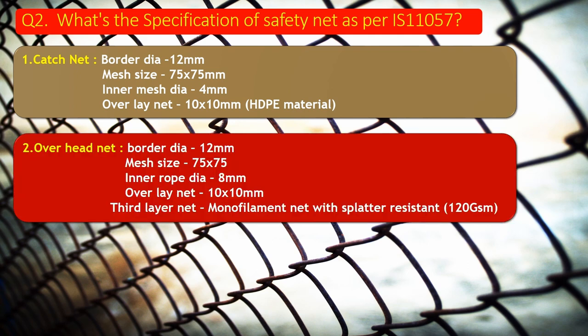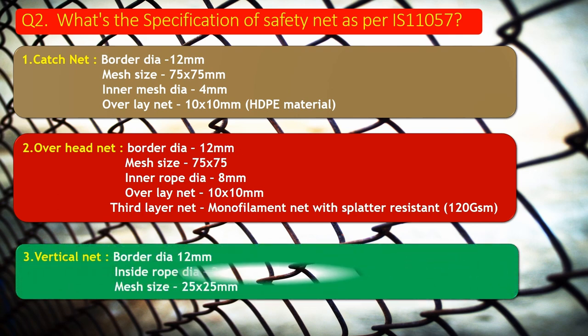Type 2 of net is the overhead net. Specifications: border diameter 12 mm, mesh size 75 by 75 mm, inner rope diameter 8 mm, overlay net 10 by 10 mm. There may be a third layer net which is made of an element net with splatter resistance made of 120 GSM. Third type of net is the vertical net. Specifications: border diameter 12 mm, inside rope diameter 2 mm, mesh size 25 by 25 mm.